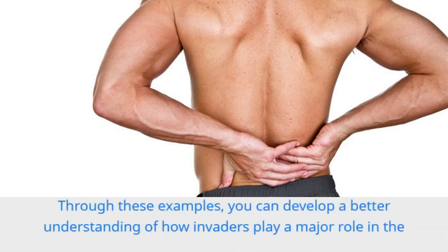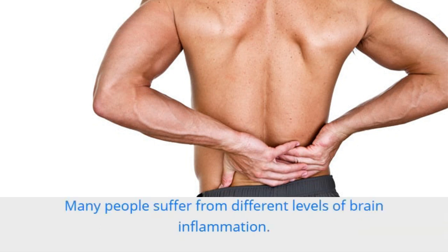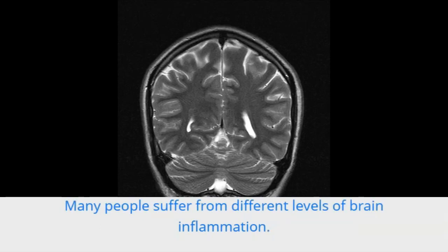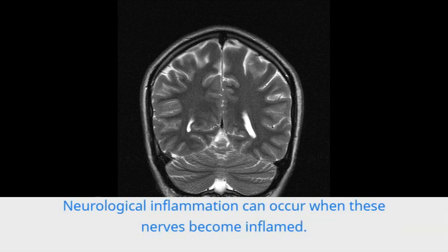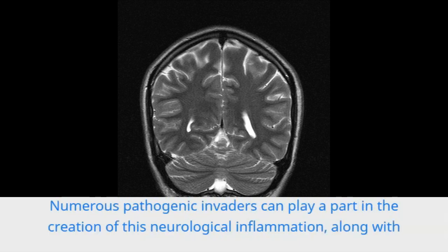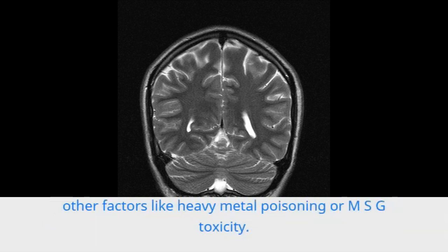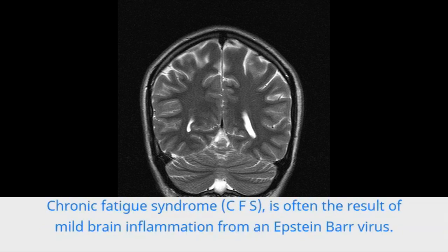When it comes to knee and hip replacements, a slow, extended recovery is often related, at least in part, to the Epstein-Barr virus in the body. There are several types of inflammation, and through these examples you can develop a better understanding of how invaders play a major role in the creation of inflammation in the body. Many people suffer from different levels of brain inflammation. Nerves connected to the brain run throughout the body, branching out into various parts of the system, and neurological inflammation can occur when these nerves become inflamed.